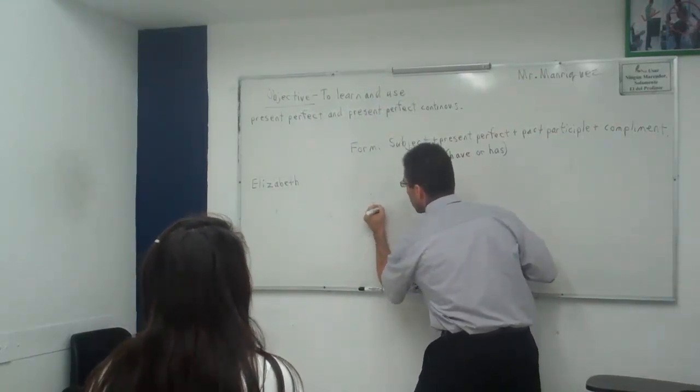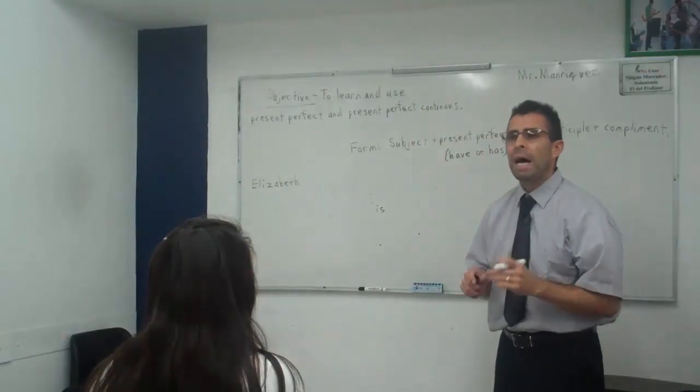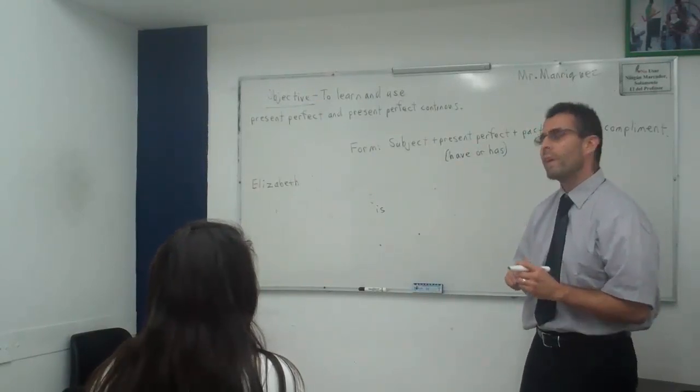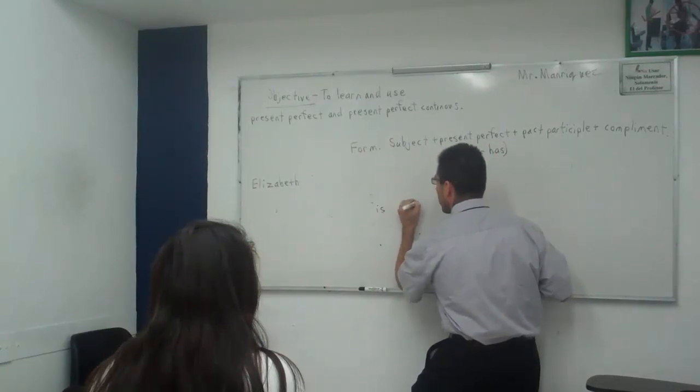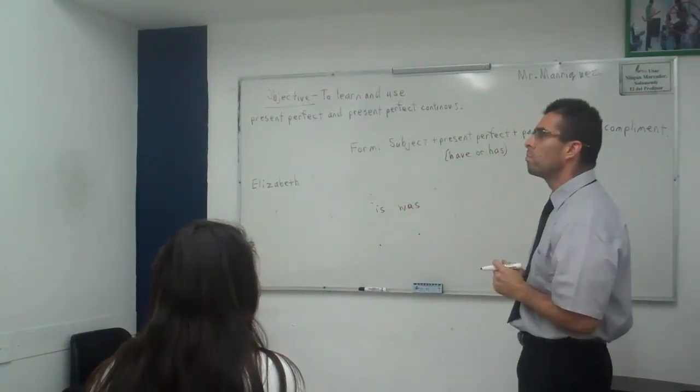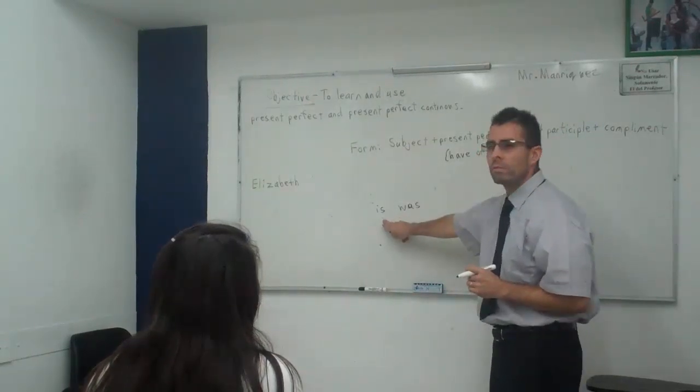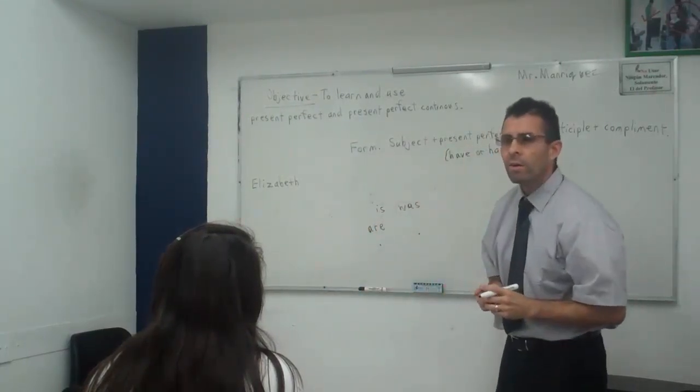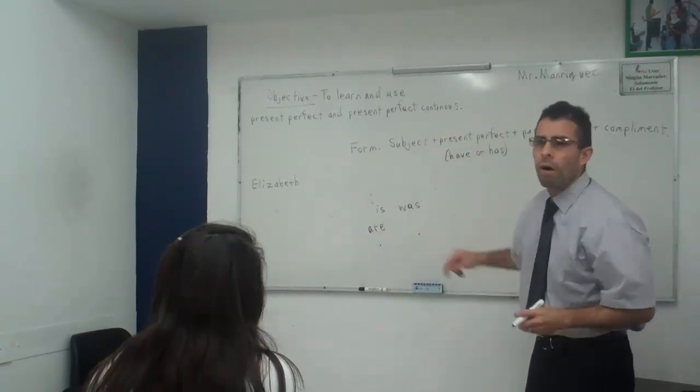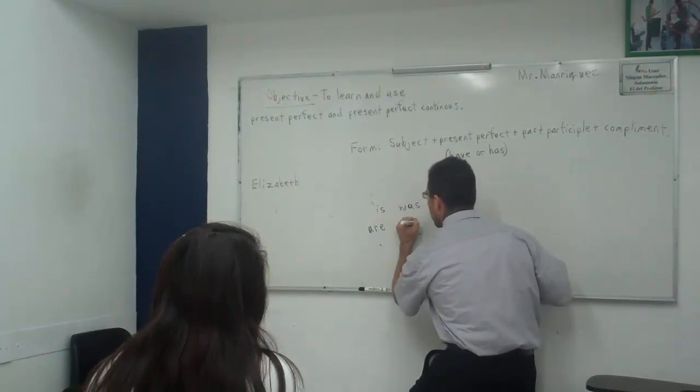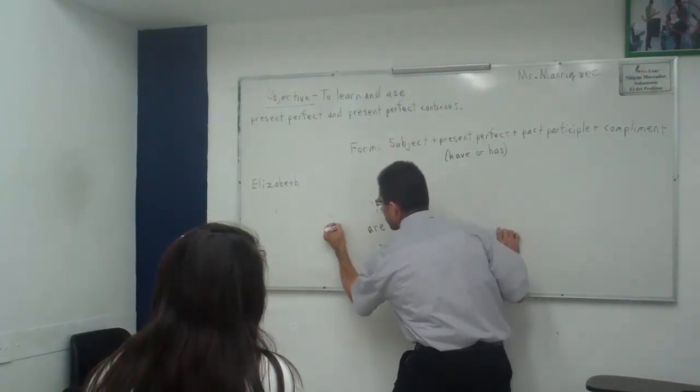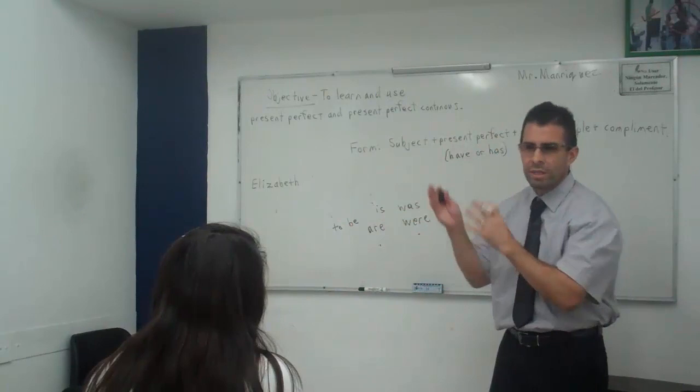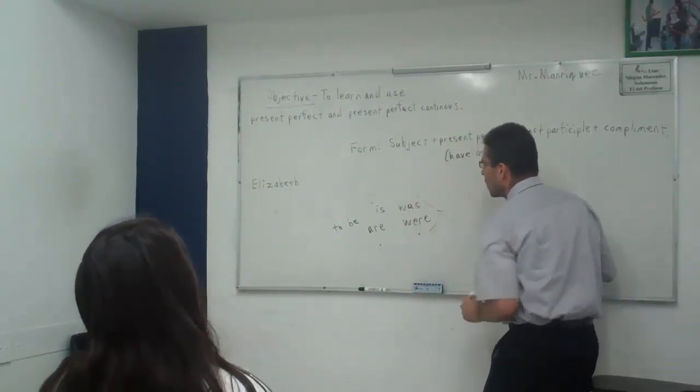For example, is, what is a simple past? Is, simple past. Past. Excellent, very good. Was. There you go. Okay. Now, how about plural? Plural would be are, right? We are. What is the simple past of are? Were. Excellent, very good. Okay, the verb to be is special because there are two. There's a singular and plural. All the other verbs, it's just one, right?